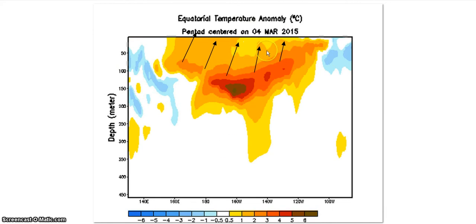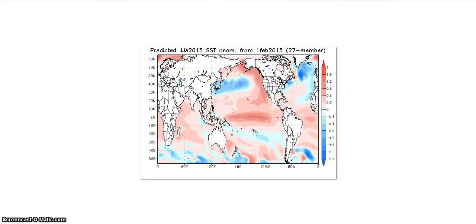This warm subsurface water is heading up, so we really need to watch that. Hopefully, if we want any hope of having a hurricane season, this would have to break up — because like last year, El Niño just destroys hurricane season except for the eastern Pacific. This is the JamStack's take on sea surface temperatures for June, July, August 2015, and this summer really has a Modoki El Niño, which would basically shut out any hurricane development except for homegrown ones like last year.